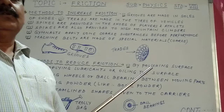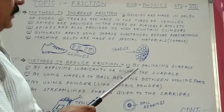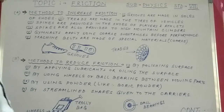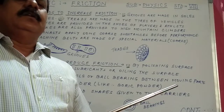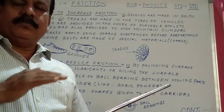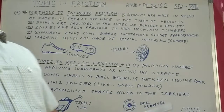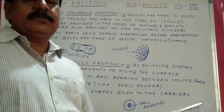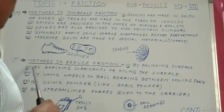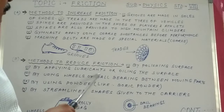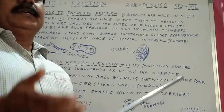Method to reduce friction, number one: by polishing the surface. From a rough surface, by polishing it we make the surface smooth, and we can reduce friction by polishing.